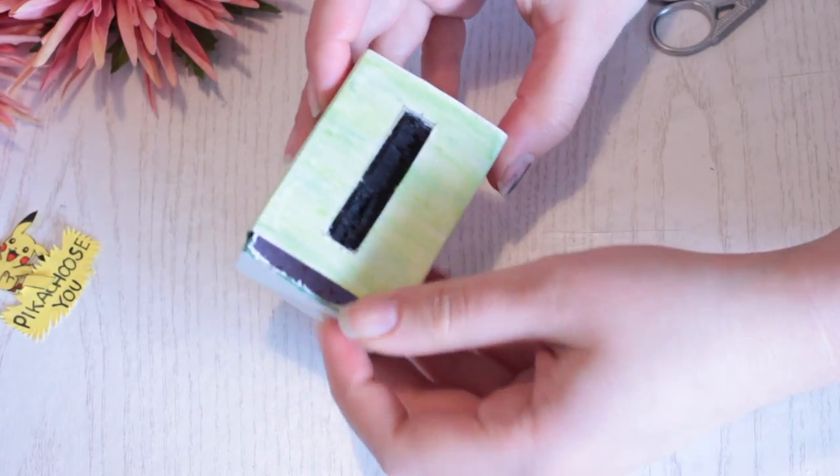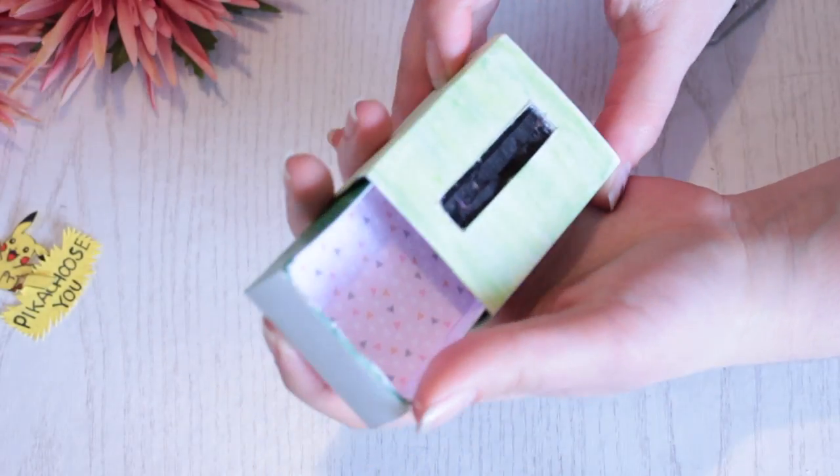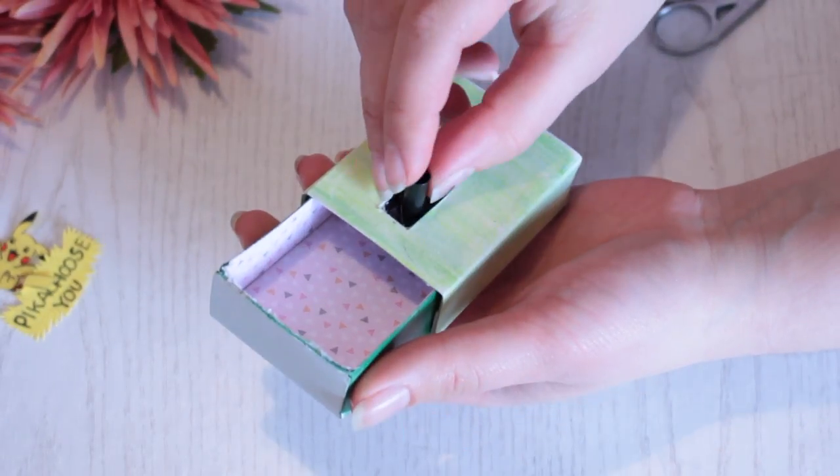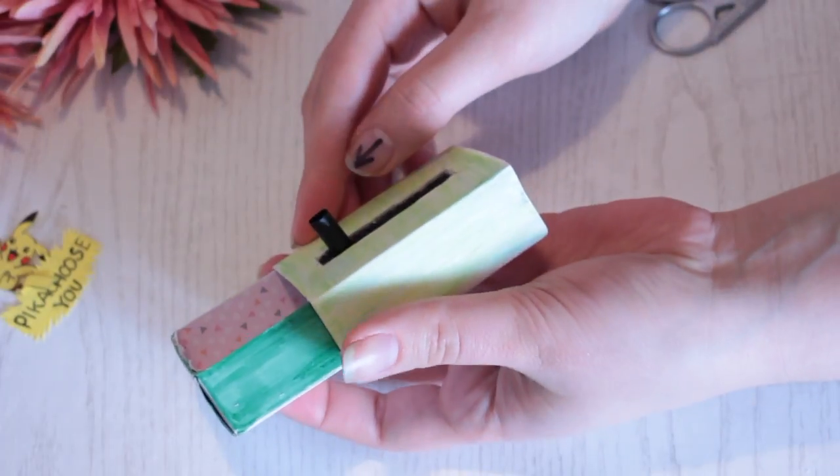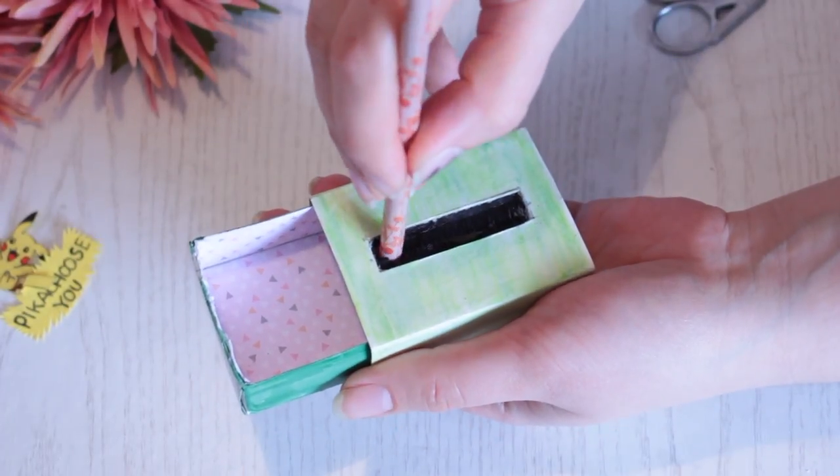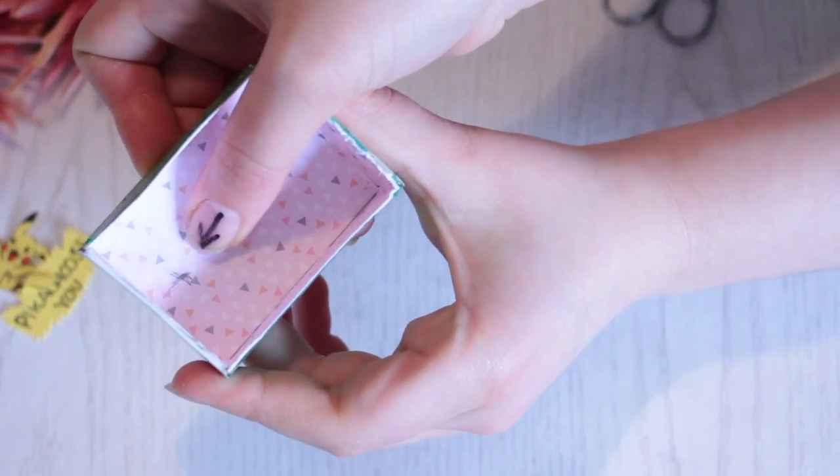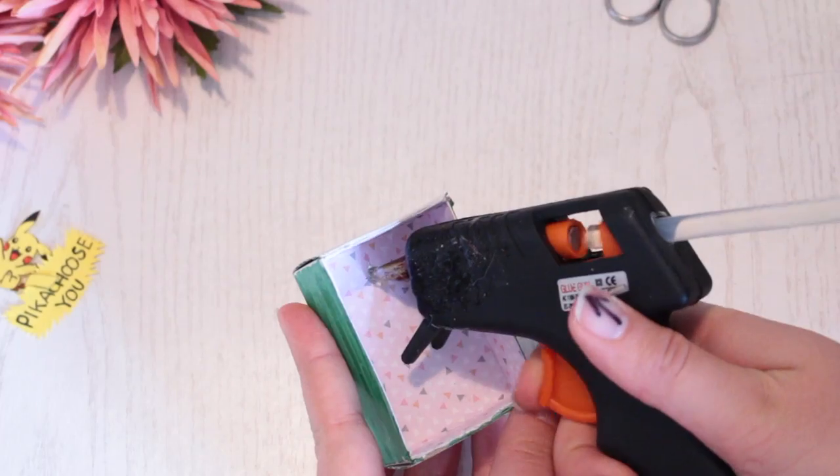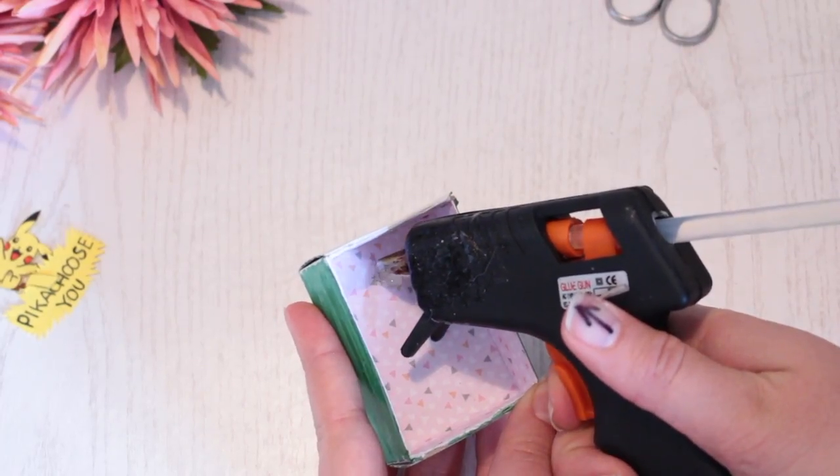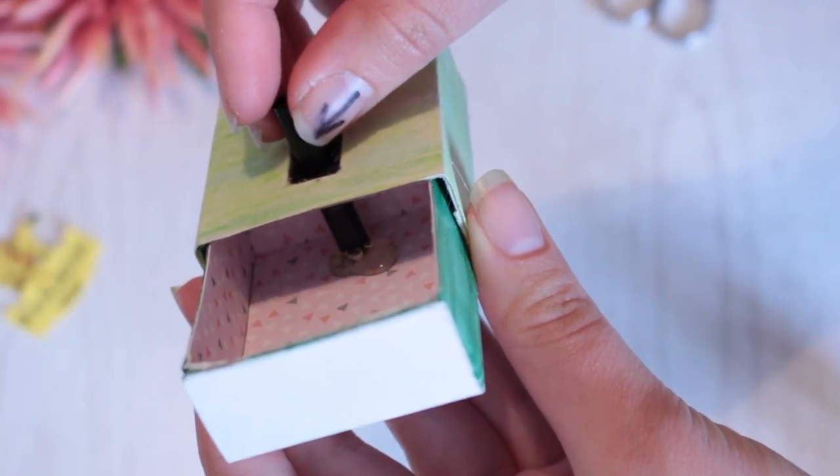Put the box back together and pull the insides out as much as possible without it falling out. Then place the straw right into it, and if you're happy with the placement, pull it out and mark where it stood. Now we need to glue the straw right onto the marking. So put some glue right on the marking, then put the box back together and add the straw right onto the glue.